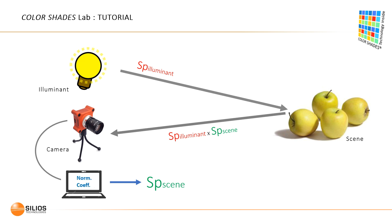Additionally, to optimize the color image rendering, a white balance treatment can be applied to the color image. The principle is the same and consists in selecting a white or gray area in the scene. Please note that the white reference procedure corrects the multispectral data, whereas the white for color image procedure does not — it only affects the color rendering of the color image.